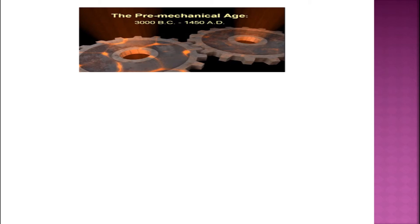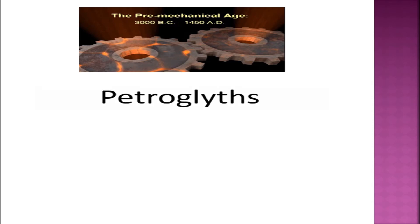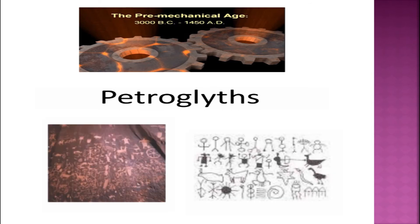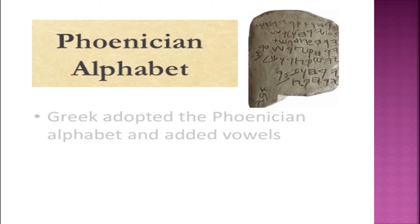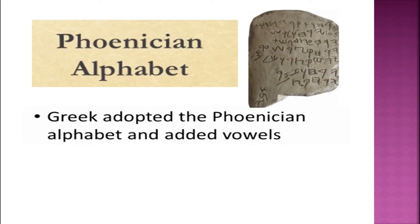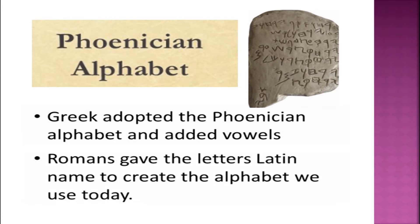The first age is the pre-mechanical age, from 3000 BC to 1450 AD. It is the earliest age of information technology. When humans first started communicating, they would try to use language or simply picture drawings known as petroglyphs, which are usually carved in rock. Early alphabets were developed, such as the Phoenician alphabet. The Greeks later adopted the Phoenician alphabet and added vowels. The Romans gave the letters Latin names to create the alphabet we use today.